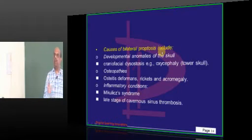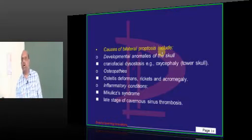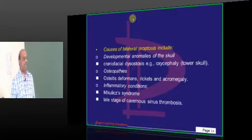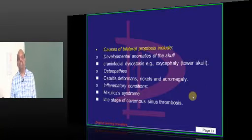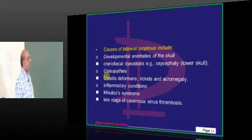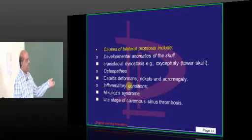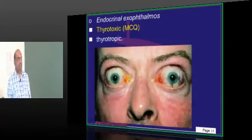What are the bilateral causes? One important cause to remember is craniofacial dysostosis — tower skull it is called, oxycephaly — which can lead to development of proptosis. Then any rickets, acromegaly, osteitis deformans, Muclub syndrome, etc.